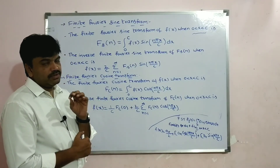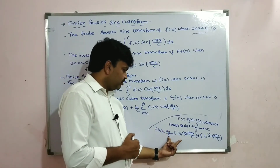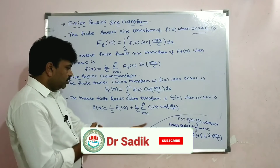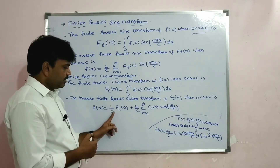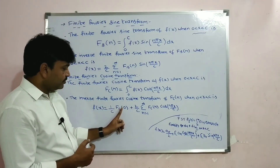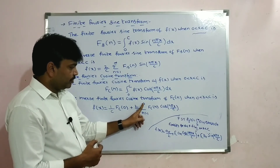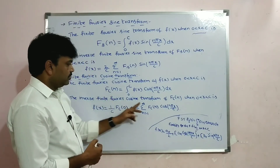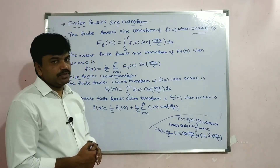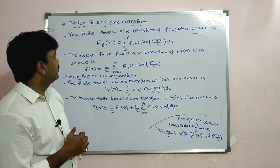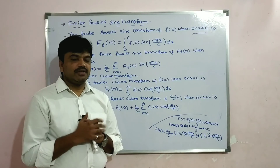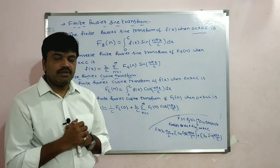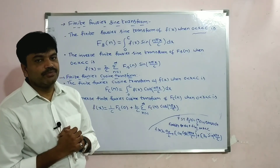For the inverse Finite Fourier Cosine Transform — whenever there is an even function we get these two terms: f(x) = (1/c)·Fc(0) + (2/c) · Σ (n=1 to ∞) Fc(n) · cos(n·π·x/c). This is about finite Fourier sine and cosine transforms. In this way you can easily remember — otherwise it is very difficult. Hope you understand. Thank you for watching this video.